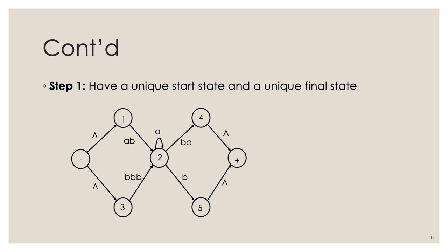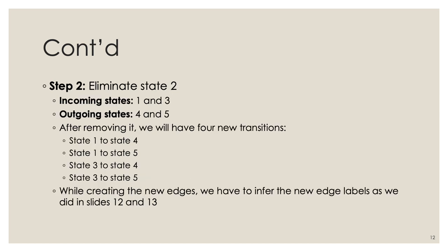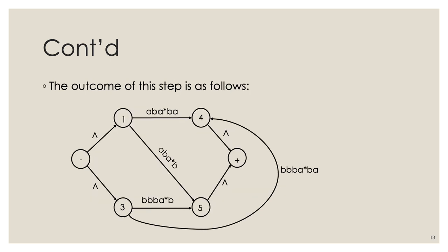Now step two: state elimination. We can start with any state; let's begin with state 2. Incoming states are 1 and 3; outgoing states are 4 and 5. We create transitions: 1 to 4, 1 to 5, 3 to 4, and 3 to 5. The resulting weights, after aggregating along the path, are: 1 to 5 gets weight a·b·a*·b, and 1 to 4 also gets a·b·a*·b.